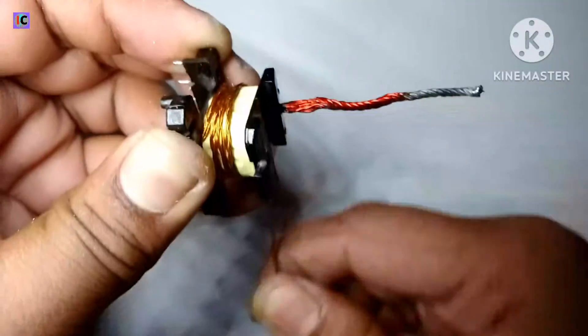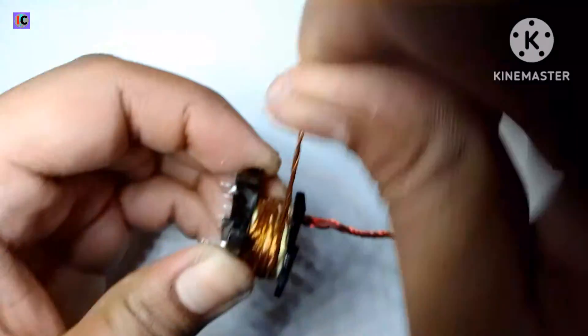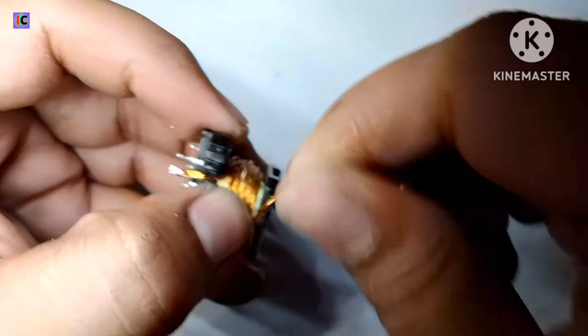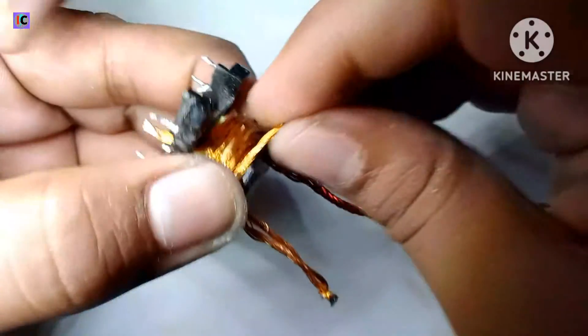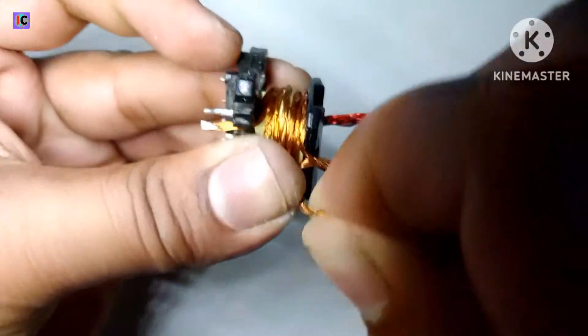Here you can see it's 6 turns, and this is the center point of this coil. This will be our ground pin.